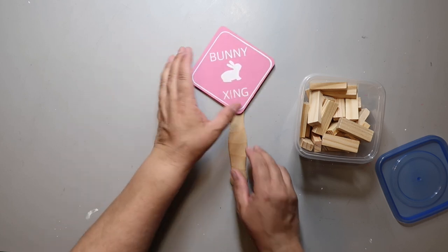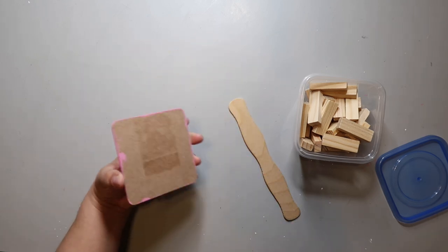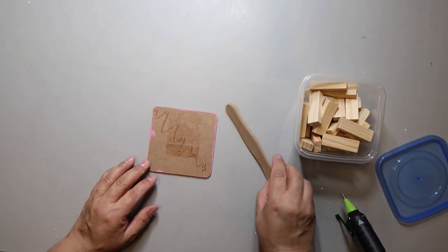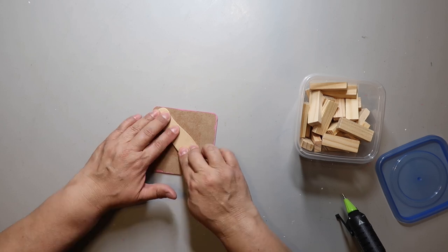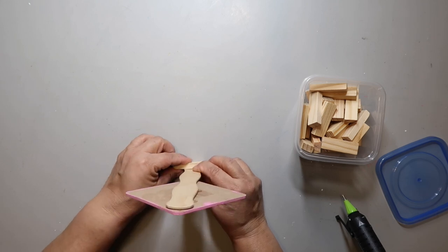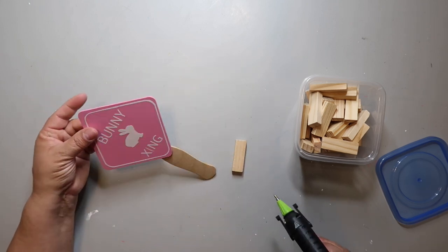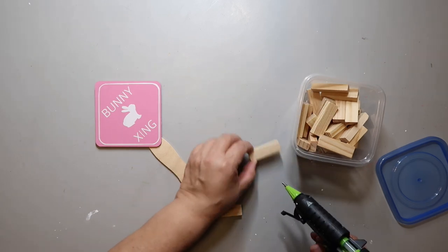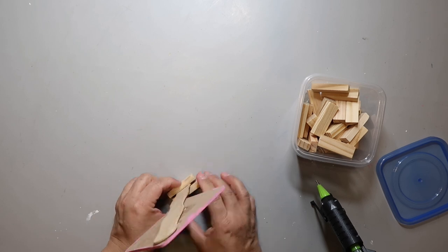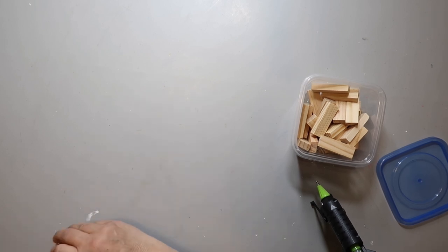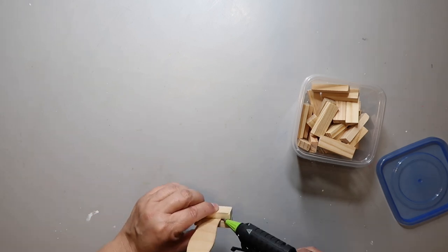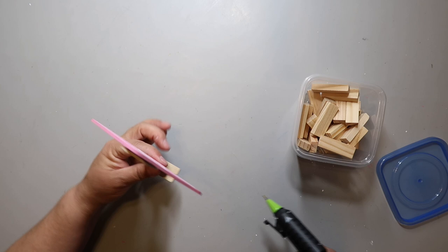As you can see, I added a vinyl decal that says bunny crossing. All I did was go into Design Space, I made a square shape and added the words bunny and crossing, and I found a bunny shape that I liked. I attached them all together, cut them out, and put it on the little sign that I painted. From my stash I had this craft stick that I think came from one of those signs you use at a wedding as a fan. If you don't have that, you can use a large craft stick. I hot glued it on the back, then I'm hot gluing some Jenga tumbling blocks to the bottom to help it stand up.